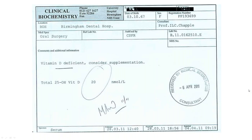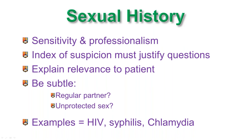You probably don't routinely take a sexual history, but there are situations in which you really ought to. You need to be sensitive, professional, and have a high index of suspicion to justify asking. I tend to explain to the patient that there are a number of different causes for what they may be presenting with, and one may be a sexually transmitted infection — so do they have a regular partner, have they had unprotected sex in the last six months? They may be at risk of HIV, syphilis, or chlamydia, which is highly prevalent particularly in teenagers. Syphilis is by no means a disease of the past and still presents mainly to oral medicine clinics.